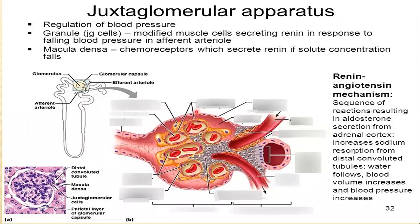At the level of the renal corpuscle, there is a structure called the juxtaglomerular apparatus. The juxtaglomerular apparatus has three special components: one component is called JG cells or juxtaglomerular cells, another component is macula densa, and the third component is the connective tissue cells, which we call lacis cells.